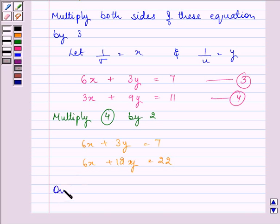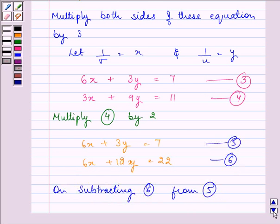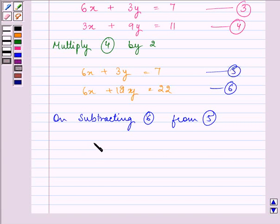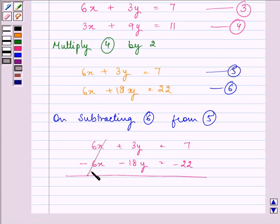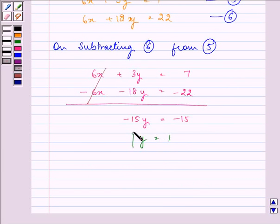Now, on subtracting 6 from 5, we have again, from 6x, we'll subtract 6x. From 3y, we'll subtract 18y. And from 7, we'll subtract 22. These two will get cancelled out. And we're left with minus 15y equal to minus 15. That is the value of y as 1.